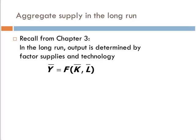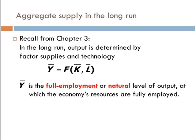Looking at chapter 3: aggregate supply in the long run was essentially determined by the inputs that were available — capital and labor, so resources — and the technology. We held the resources fixed and the technology fixed, so output was fixed. We have a long run aggregate supply curve that is basically perfectly inelastic to price and completely fixed. This Y-bar is our full employment level of output, or the natural level of output, at which point the economy's resources are fully employed.